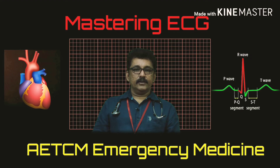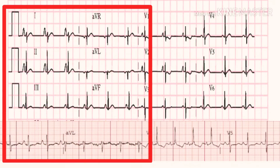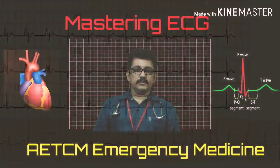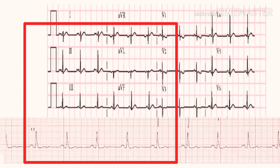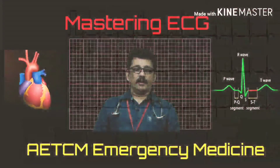This 12-lead ECG shows very tall P-waves in all leads — you can make a diagnosis of right atrial enlargement, called P-pulmonale. In this other ECG, the P-wave is bifid and notched in almost all leads — wide and notched — this is called P-mitrale, a classical finding of left atrial enlargement.